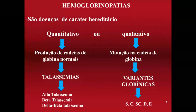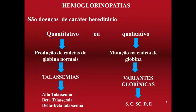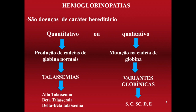As hemoglobinopatias são divididas em dois grandes grupos: as quantitativas e as qualitativas. Nas quantitativas, o problema está na quantidade de produção das cadeias de globina, tanto alfa quanto beta, como delta e gama. Nos qualitativos, temos as variantes de globina: hemoglobinopatia S, AC, SC, AS, SS, D, E e assim por diante.